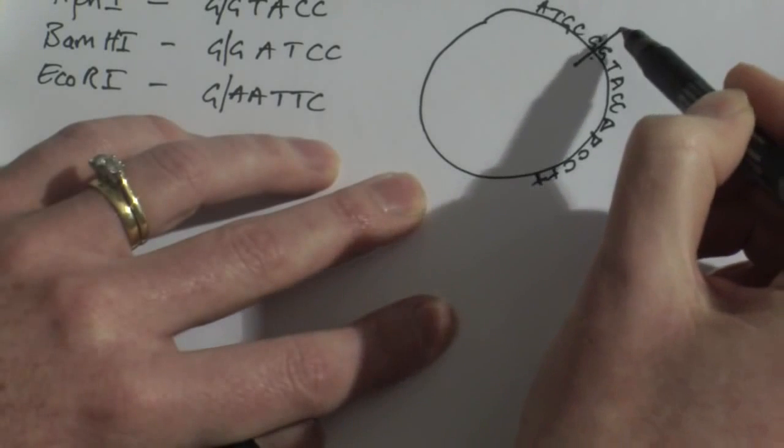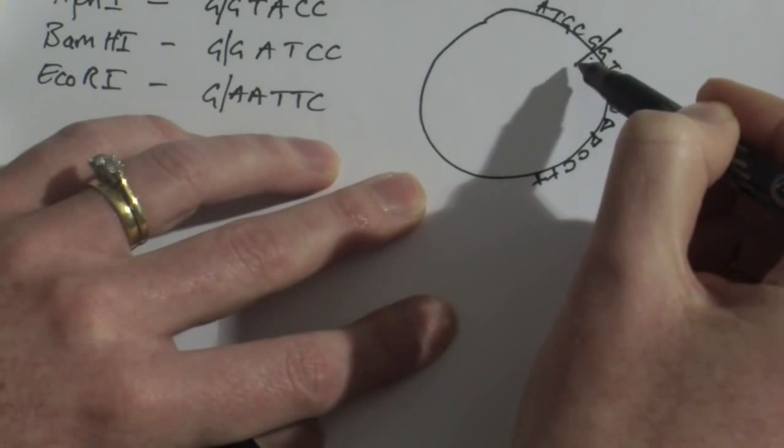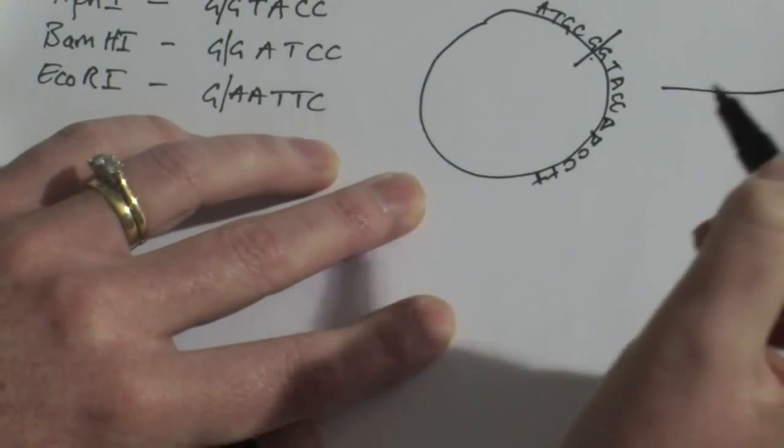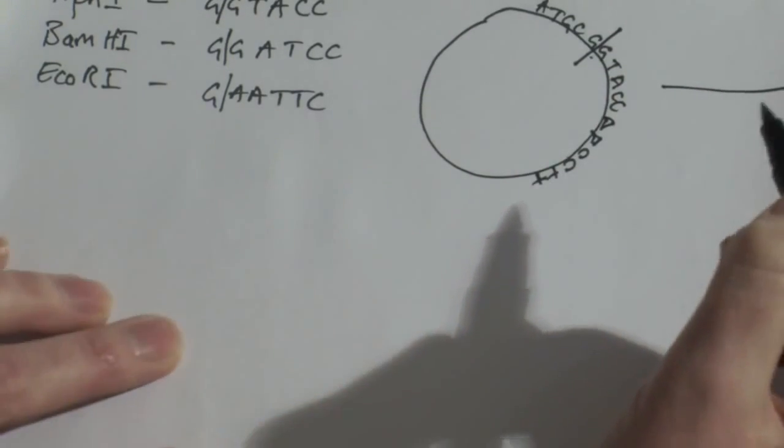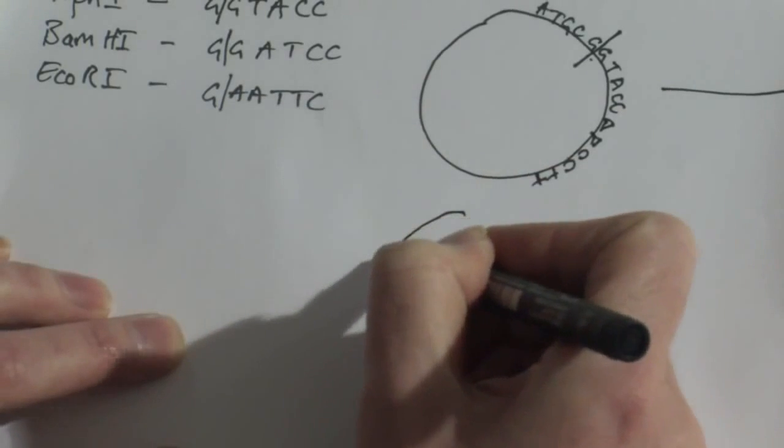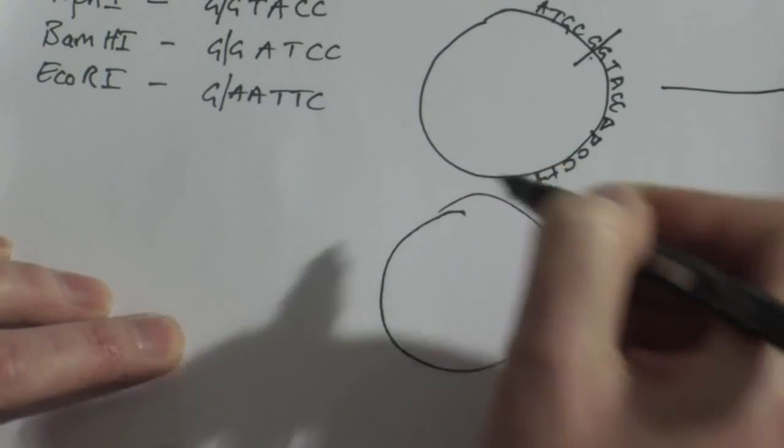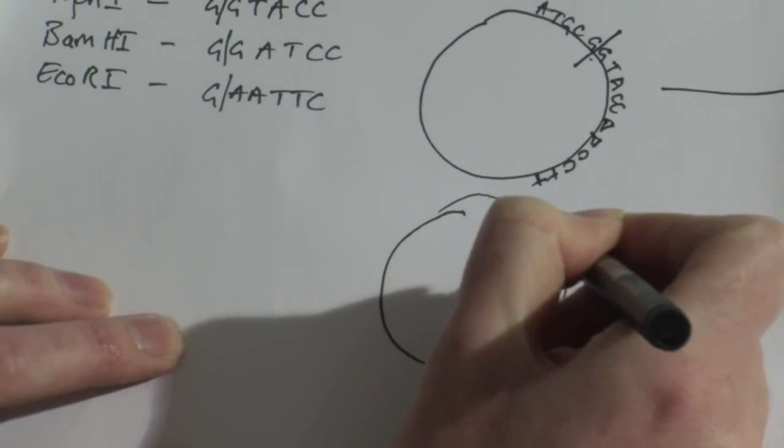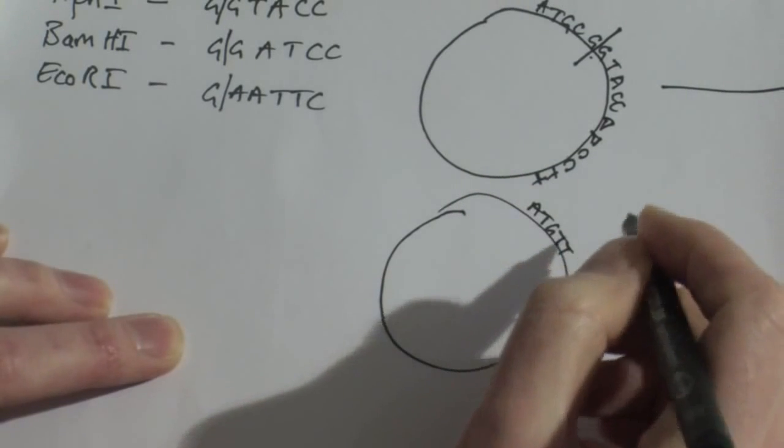If the plasmid was cut once in a position like this, my circular plasmid becomes linearized and I get a linear piece of DNA. Let's imagine another plasmid down here, again, with an unknown sequence of DNA running all the way around the plasmid.